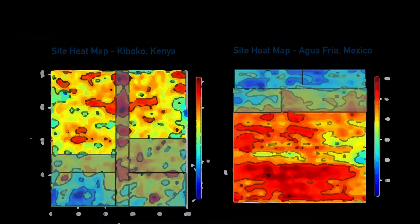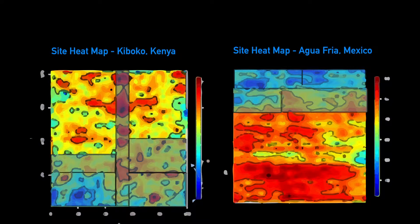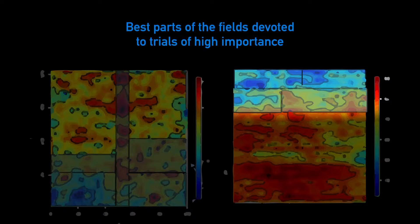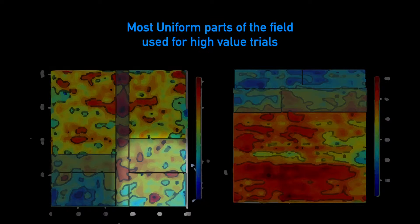As described in video one, site characterization heat maps can effectively guide trial layout in the field. Trials should also be laid out so that they do not cut across highly variable parts of the field. Generally, the most uniform and reliable parts of the low nitrogen block should be devoted to the most important trials, such as genetic marker studies or advanced testing.